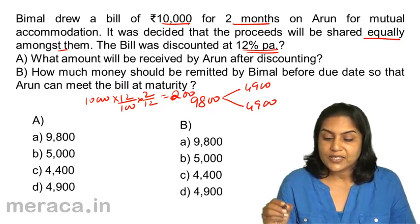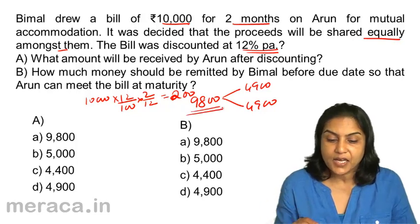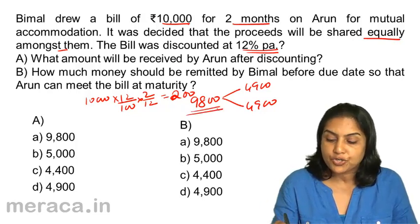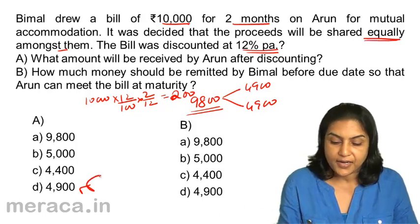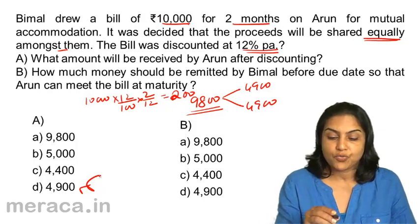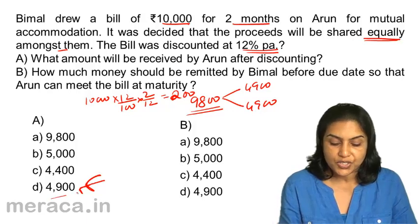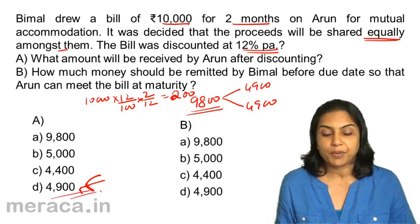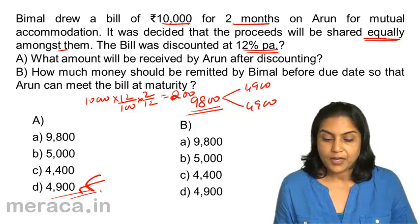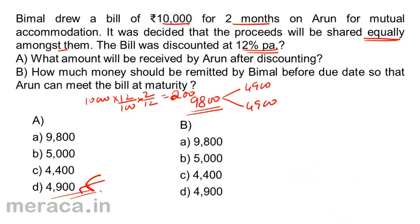Therefore, once the bill is discounted and Bimal gets Rs.9,800, Bimal should send half the proceeds — since they share it equally — which is Rs.4,900 to Arun. So the first answer: what amount will be received by Arun after discounting? Since they are sharing the proceeds equally, Rs.4,900 will be received. The Rs.10,000 is accounted as: Bimal gets Rs.4,900 and Arun gets Rs.4,900.